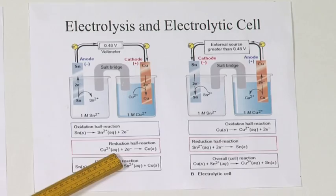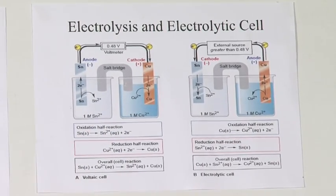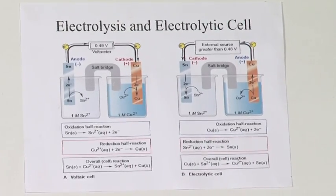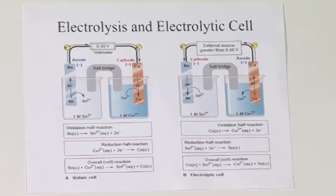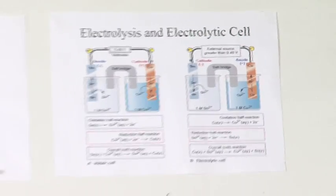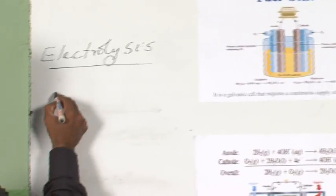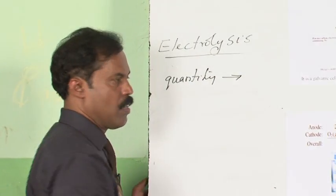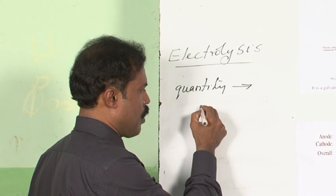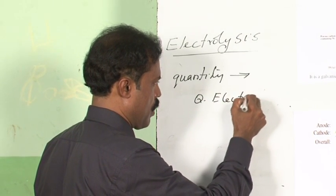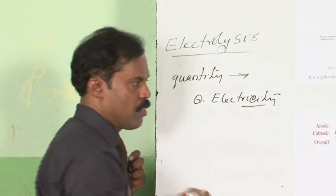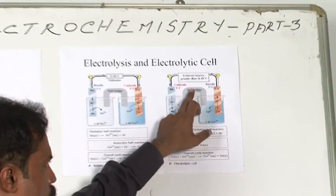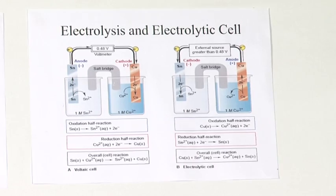Now there is a quantitative aspect of electrolysis. A scientist called Faraday studied electrolysis and brought out two laws, called Faraday's laws of electrolysis. The first law says the quantity of substance deposited is directly proportional to the quantity of electricity. More the electricity you pass, more will be the chemical change — more the amount of substance deposited.